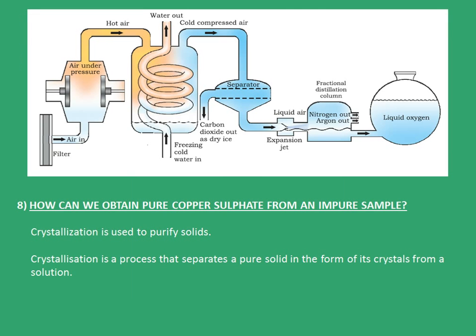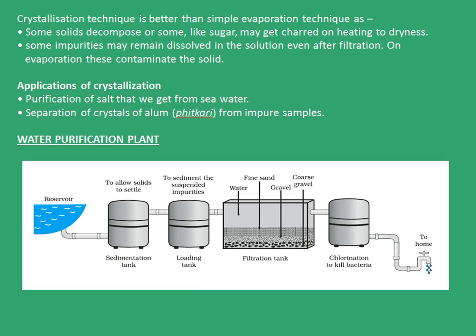The eighth one is: how can we obtain pure copper sulfate from an impure sample? In this case, the crystallization technique is used to purify solids. Crystallization is a process that separates a pure solid in the form of its crystals from a solution. Crystallization is better than simple evaporation because some solids decompose or may get charred on heating to dryness, and some impurities may remain dissolved in the solution even after filtration, contaminating the solid on evaporation. Some applications of crystallization are purification of salt from sea water and separation of crystals of alum from impure samples.